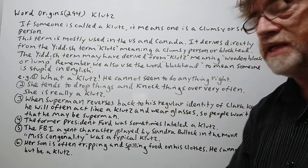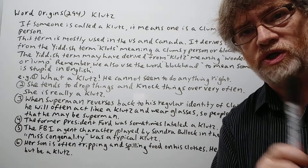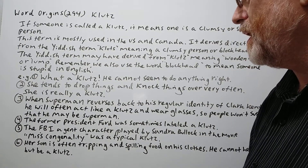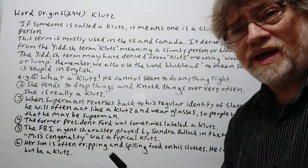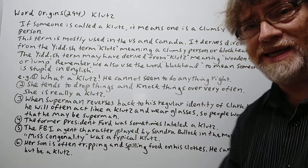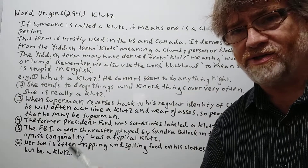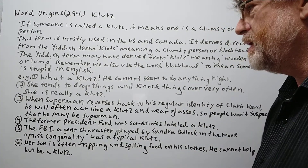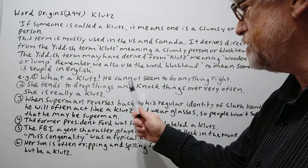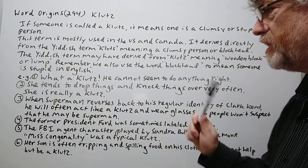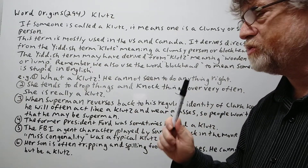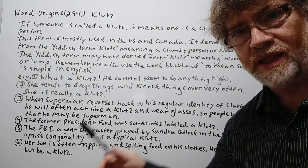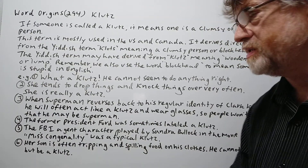We have six examples to show just how it's used. Here's the first one: 'What a klotz. He cannot seem to do anything right.' That's a typical way you may hear it, like in a movie. Number two: 'She tends to drop things and knock things over very often. She is really a klotz.' This is especially the clumsy type of klotz.